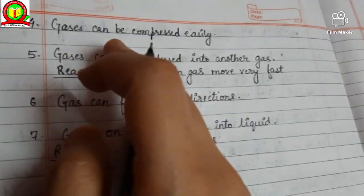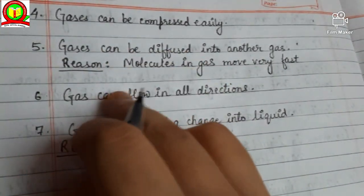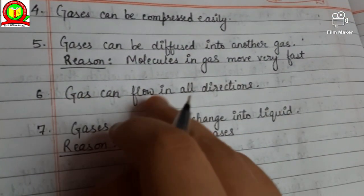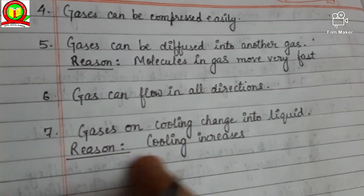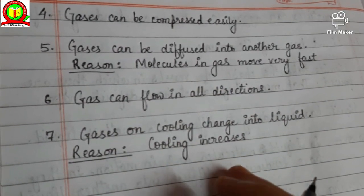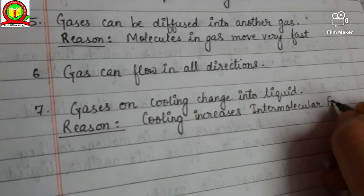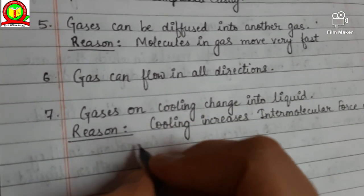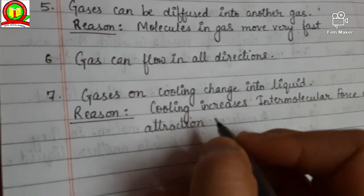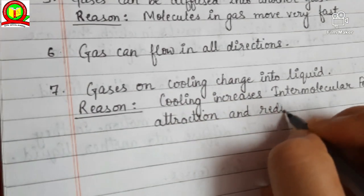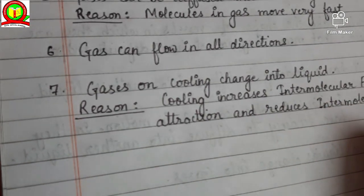Therefore, the molecules move very freely in all possible directions. Third, gases have no free surface area, meaning molecules escape from the open surface. Fourth, gases can be compressed easily. Fifth, gases can be diffused into another gas because molecules in gas move very fast. Sixth, gas can flow in all directions. Seventh, gases on cooling change into liquid because cooling increases intermolecular force of attraction and reduces intermolecular force of repulsion.